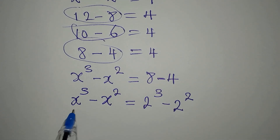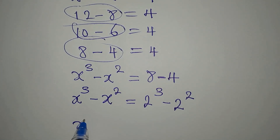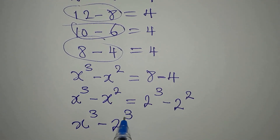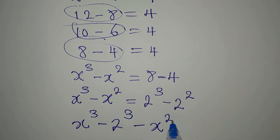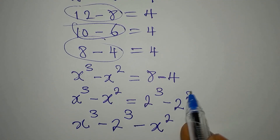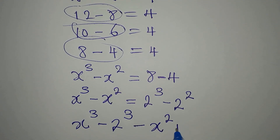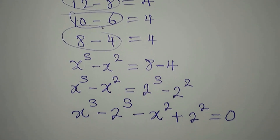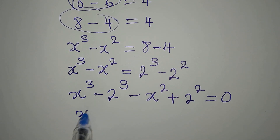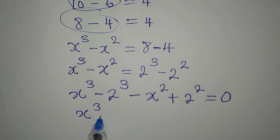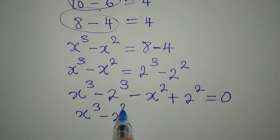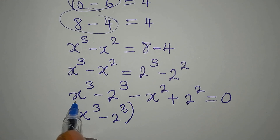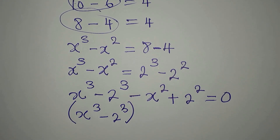The next step is to balance up — I'll bring terms across. We'll have x to the power of 3, minus 2 to the power of 3, then minus x squared, and when this term comes over it becomes plus 2 to the power of 2, and everything is equal to zero.